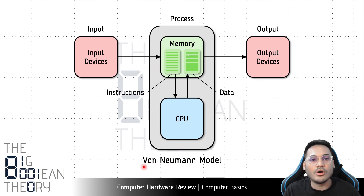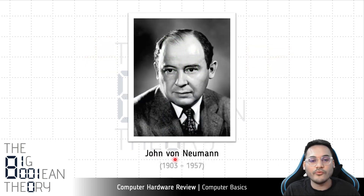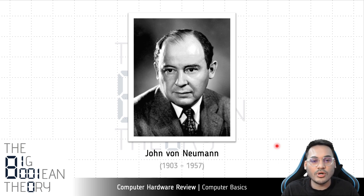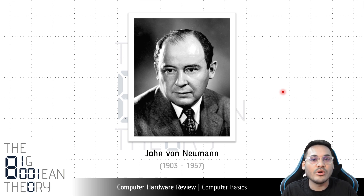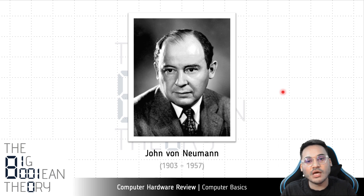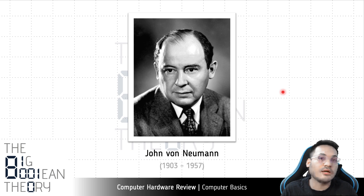The Von Neumann model was proposed by John Von Neumann, a computer scientist, in 1945. It is an accurate description of how any computer works. Any modern computer, regardless of type, complexity, or implementation details, is based on this simple model: there are input and output devices via which the user interacts with the system, memory where instructions and data are stored, and a processor responsible for processing the data.